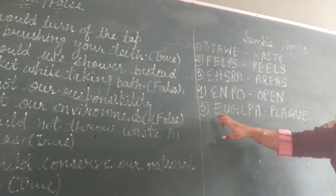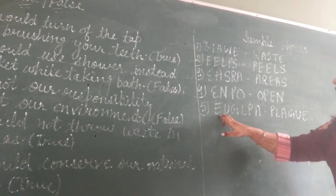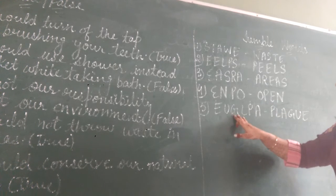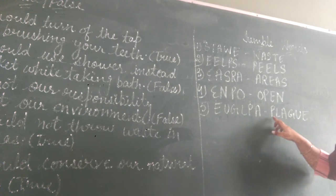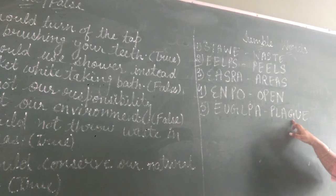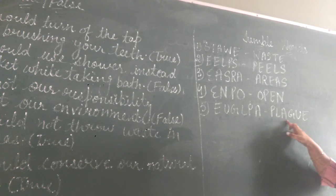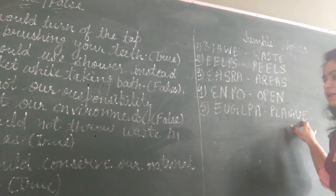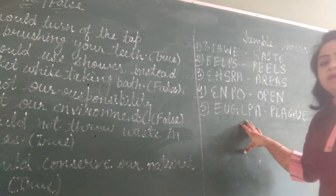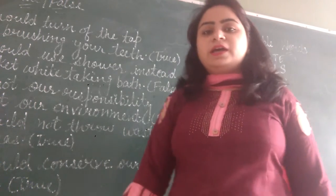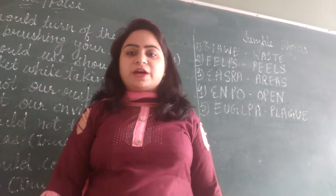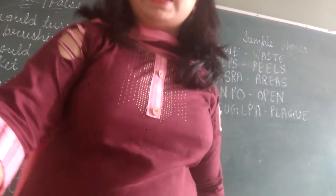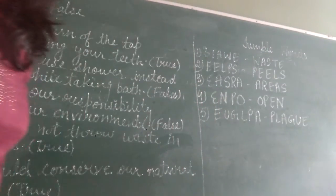Next jumbled word: E-U-G-L-P-A — the answer is P-L-A-G-U-E, plague. Clear? इसके साथ बेटा आपका six chapter complete होता है. आज आप इसको complete करना and try to learn it. Thank you.